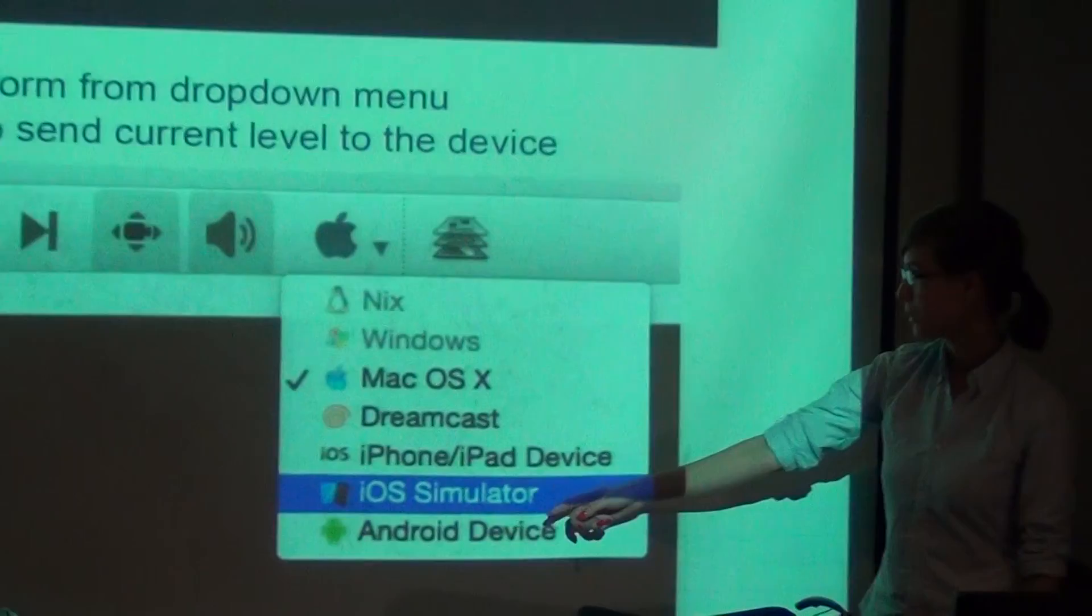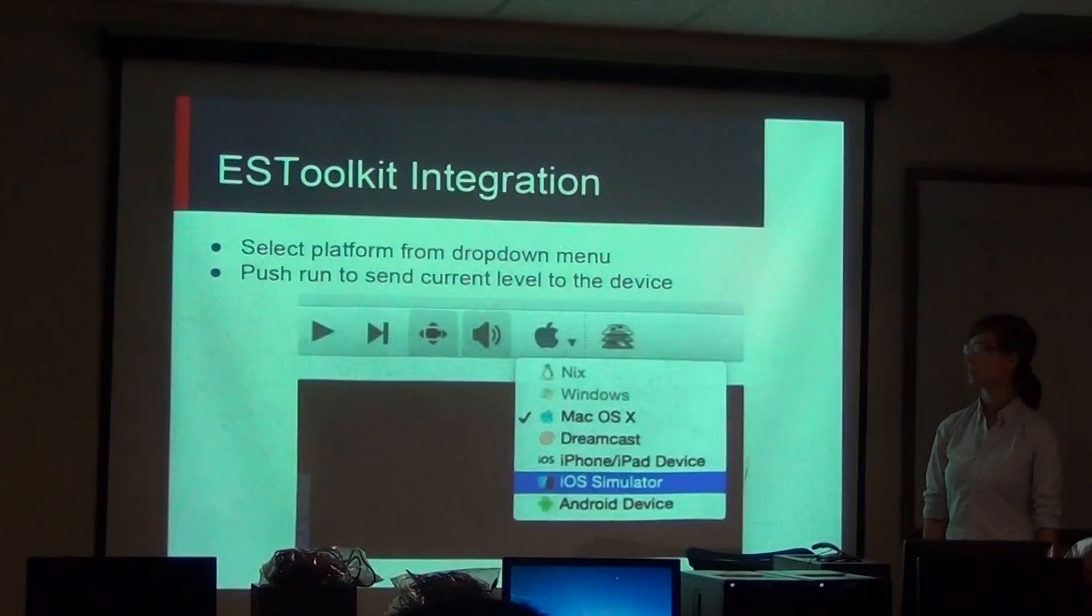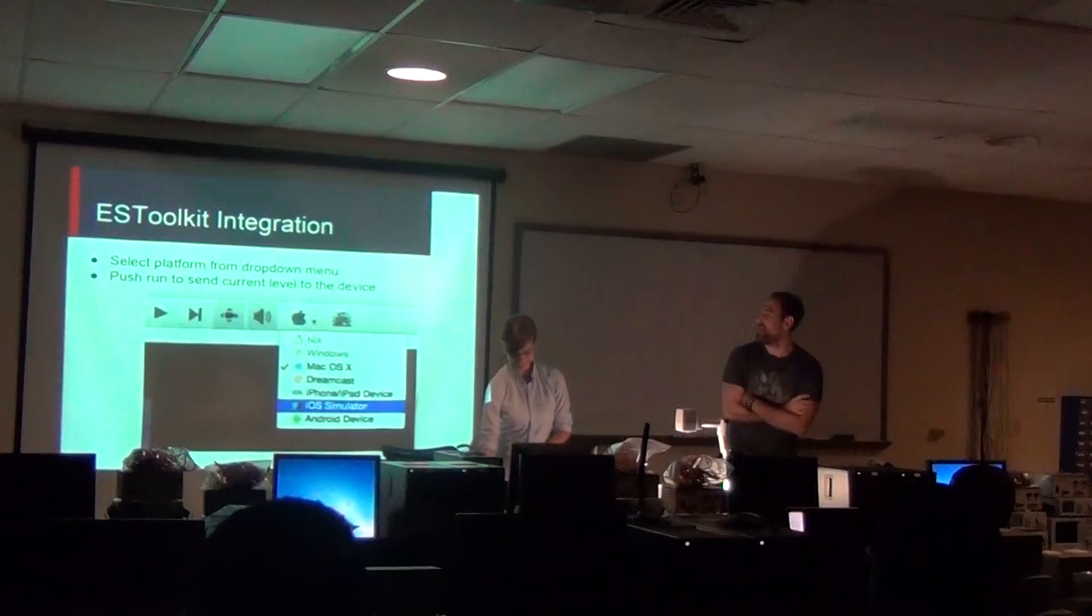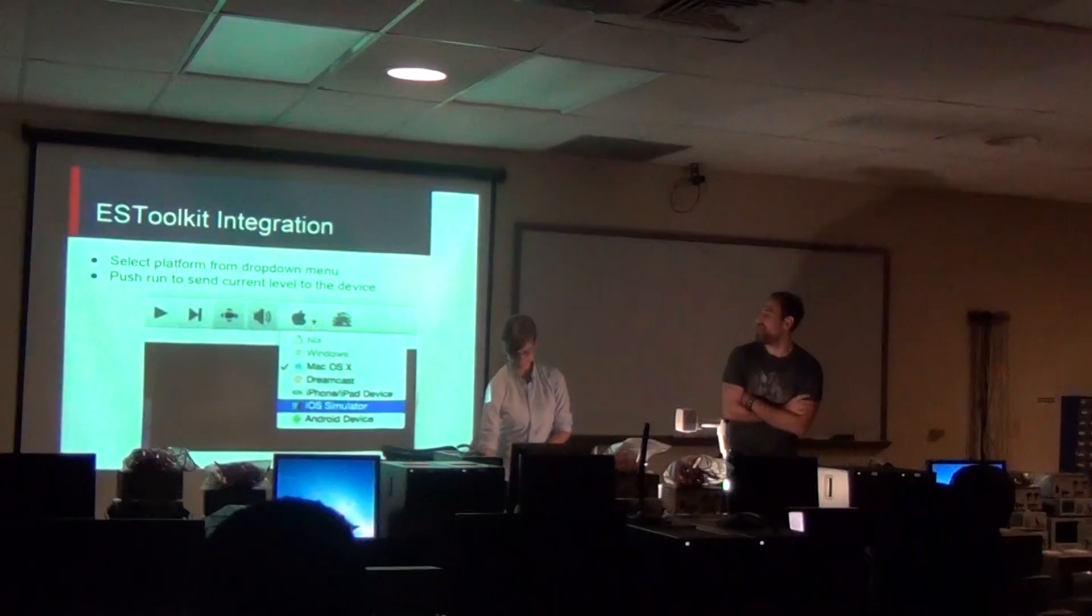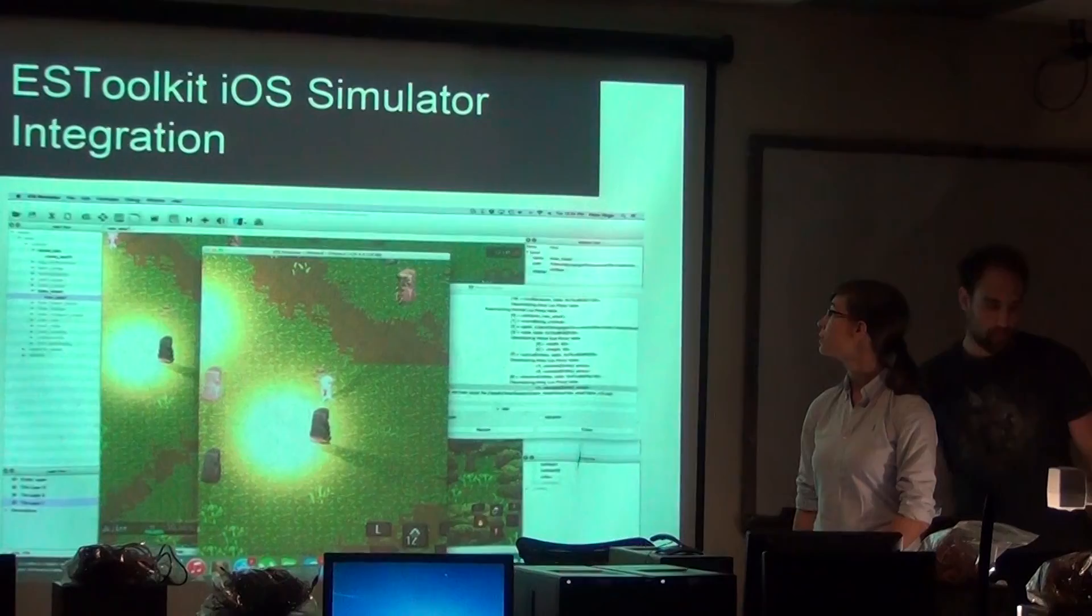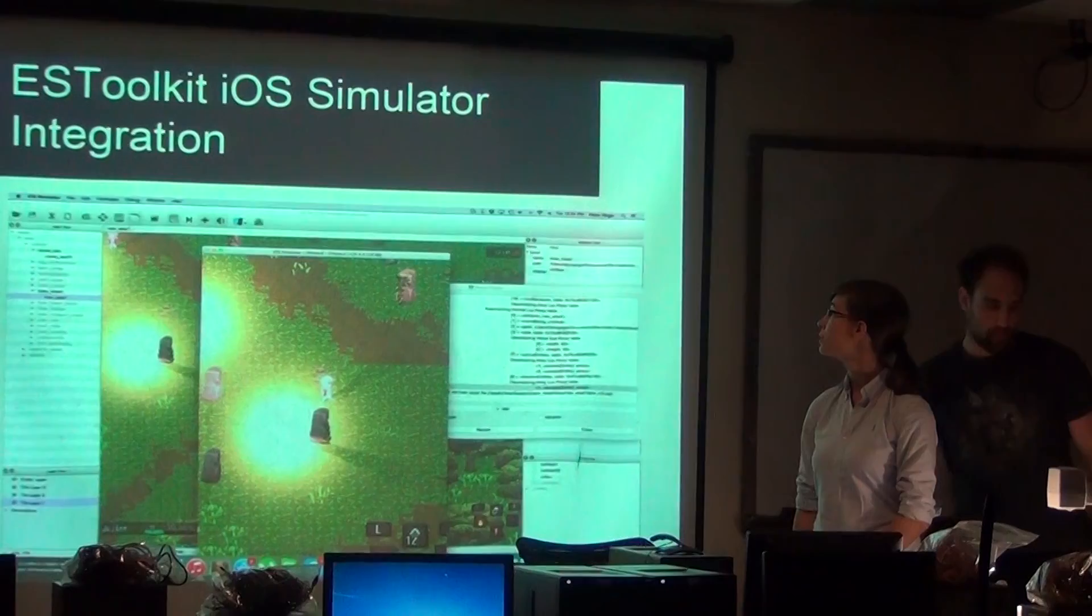This shows the ES toolkit integration here. You can select the platform from the dropdown menu with the iOS simulator here and the iPhone. You can then push run to send the current level to the device. Android doesn't work right now. But that's the level editor. So you can play through the level edits you created. It all works right. And this image shows the iOS simulator where they're integrated with the ES toolkit. The toolkit's in the background. There's a simulator and this is an event log.